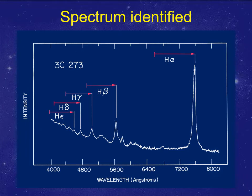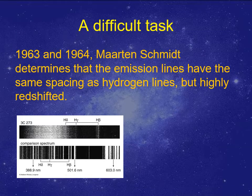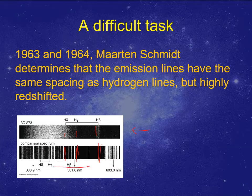Eventually, with 3C273, someone recognized that the spacing of the spectral lines was the same as the spacing of hydrogen spectral lines — they were just all in the wrong spot. What should have been a red hydrogen alpha line was way over in the infrared, and spectral lines that should have been in the ultraviolet were in the visible range. No one recognized the spectrum because the spectral lines were all in the wrong spot. That meant this thing was supremely redshifted. You can just barely see the spectral lines in the actual spectrum of 3C273, and they're entirely in the wrong spot — massively, massively redshifted.